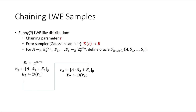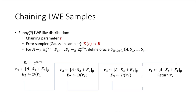It rounds the result down and uses it as a seed to generate E3 for the next iteration of the chain. It continues this procedure for tau iterations, and in the final iteration it returns the seed of the result. We are essentially chaining multiple LWE distributions with multiple keys together to derive a new distribution.